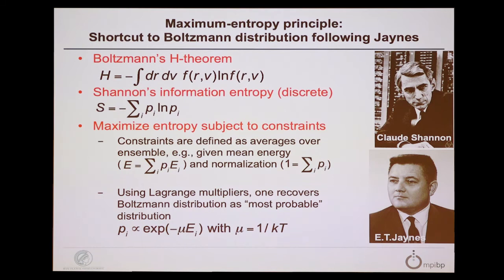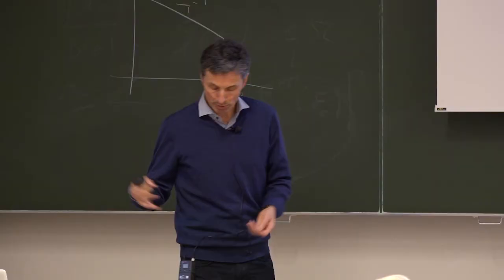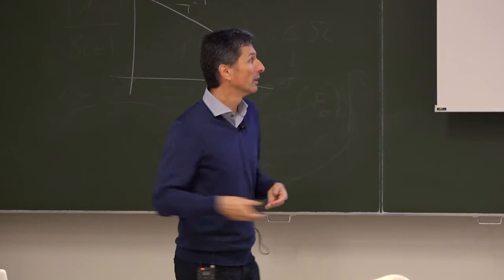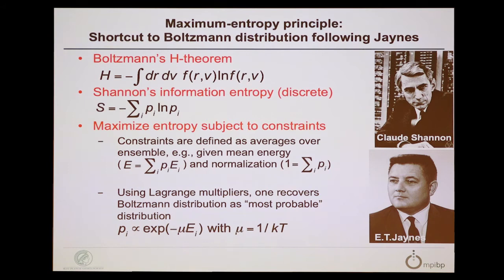No introduction is needed here — we heard about Boltzmann's H-theorem and Shannon's information entropy. Jaynes' shortcut is to maximize entropy of the Shannon form under certain constraints: normalization, and in the case of the canonical ensemble, total energy as a weighted sum of the probabilities of individual ensemble members p_i. By maximizing this entropy, one readily ends up with probabilities of the individual ensemble members of the Boltzmann type, and then identifies the Lagrange multiplier with the reciprocal temperature.